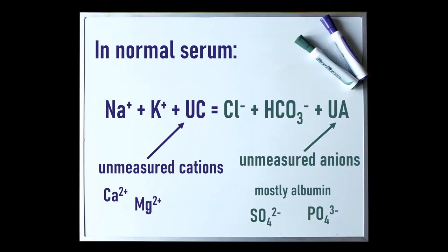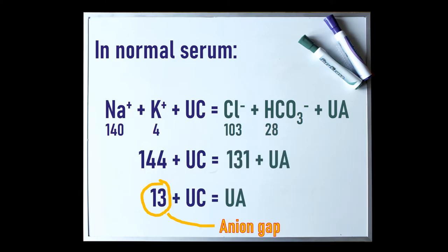The most prevalent cations are sodium and potassium. The rest we call unmeasured cations. The most prevalent anions are chloride and bicarbonate. The rest we call unmeasured anions. Plug in some normal values and you end up with this number here. This is because there are more unmeasured anions kicking about than there are unmeasured cations. This shortfall in cations is bizarrely called the anion gap.